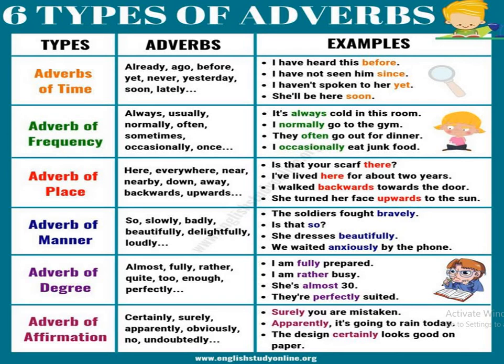The next is adverb of frequency. Examples: 'It's always cold in this room' — 'always' tells how often. 'I normally go to the gym' — 'normally' is the adverb of frequency. 'They often go out for dinner' — 'often' means frequently. 'I occasionally eat junk food' — 'occasionally' tells how many times. These are adverbs of frequency.